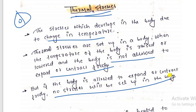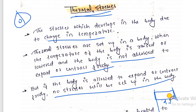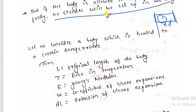Thermal stress is not induced in a body which is free to expand and contract. When a body is rigidly fixed from both ends, it is very difficult to expand and contract. When this body is subjected to heat or contraction, a stress will be induced. That is what we mean by thermal stress.